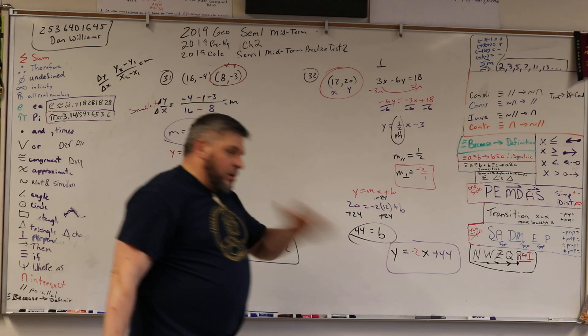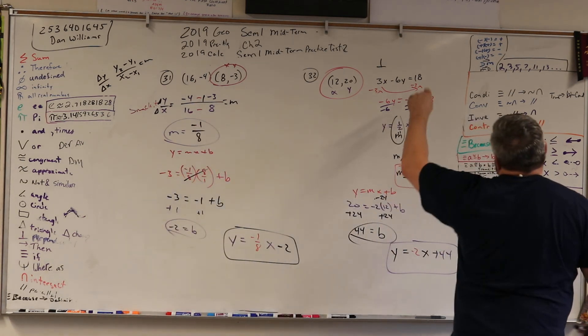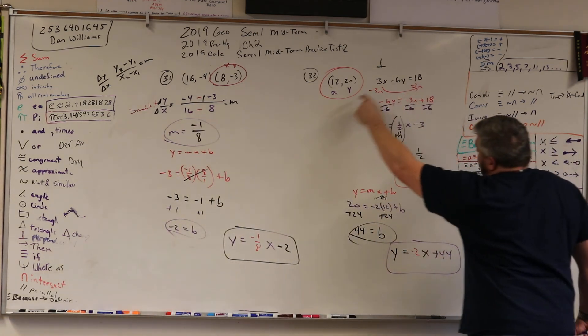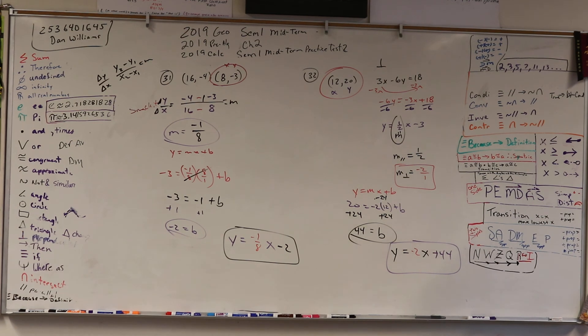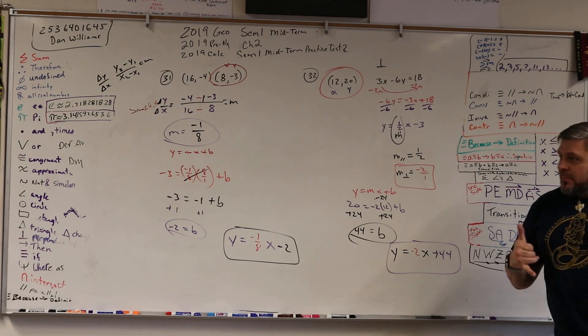The equation of a line that's perpendicular to this one goes through this point. So, questions? Is that negative 2? Negative 2x? Yes, negative 2x.